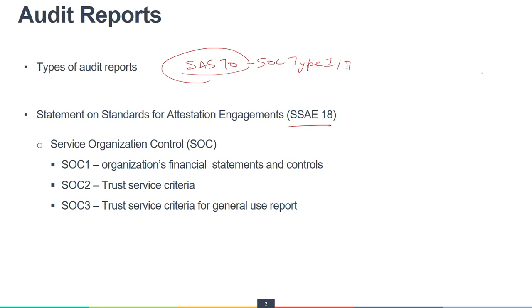SSAE 18 is basically the SOC standard. SOC is part of the SSAE reporting format, which was created by AICPA — the American Institute of Certified Public Accountants. SSAE 18 is the current audit standard. Just remember that. Further, we have the Service Organization Control, or SOC, reports.